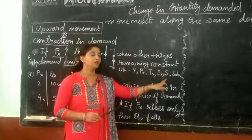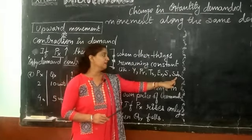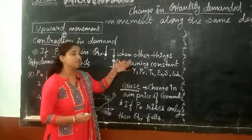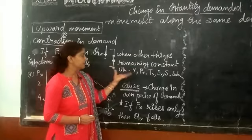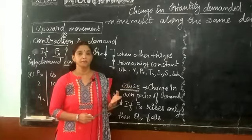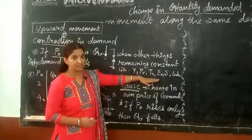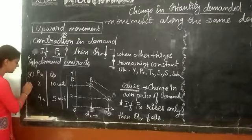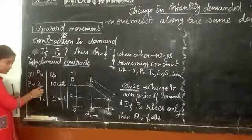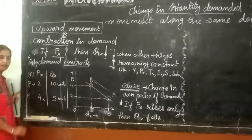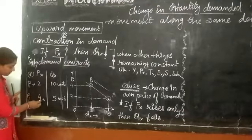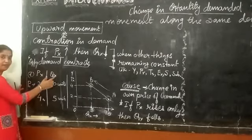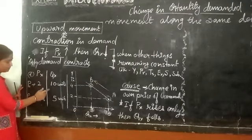Supply of that particular commodity also remains constant, and availability of substitute goods also remains constant. All these factors which may affect a particular commodity's demand are considered constant. Taking these factors as constant, if we assume the initial price P0 is 2 rupees per unit and the price rises to 4 rupees per unit, in that condition the quantity demanded will fall.